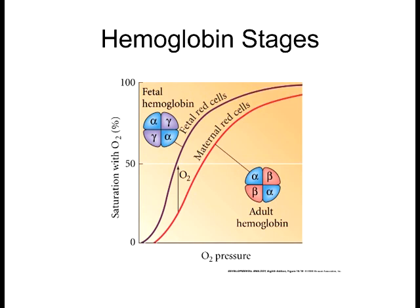That might pose a problem normally because if you can't deposit the oxygen, that's no good. However, in fetuses, the muscle cells and other cells that need the oxygen also have a higher affinity than the gamma hemoglobin, so there's no problem. As we get older and develop, eventually we displace all of our hemoglobin — replacing the gamma chains with what we call beta chains. These have a lower affinity for oxygen, and our cells also end up having a lower affinity, and it works out just fine.